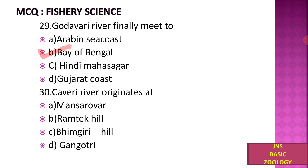The Kaveri river originates at: A) Manasarovar, B) Ram Tech Hill, C) Bhimgiri Hill, D) Gangotri. The correct option is C — the Kaveri river originates at Bhimgiri Hill, which is a mountain range in the Western Ghats of Maharashtra.